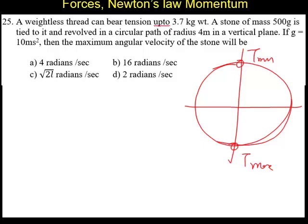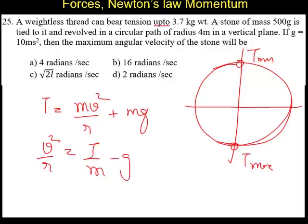So, what will be the tension at the lowest point? Tension at the lowest point equal to M V square by R plus M G, the lowest point. So, we have to go for the calculation of V square by R equal to, we divide entire thing by M. So, T by M minus G.